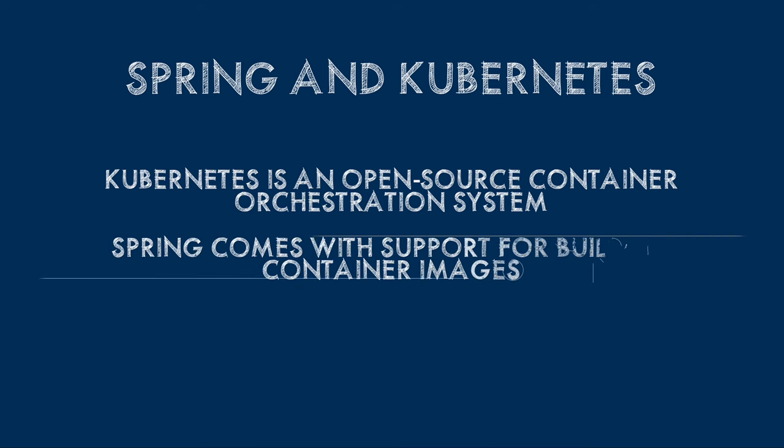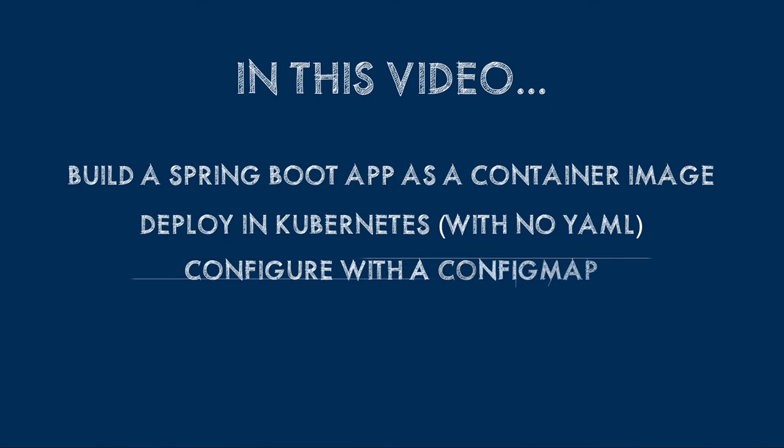Kubernetes is an open source container orchestration system — a platform for deploying and managing the lifecycle of applications packaged in container images. If you're a Spring developer, Spring Boot offers fantastic build-time support for creating container images and runtime support for configuration, liveness, readiness, and graceful shutdown. In this video I'll show you how to build a Spring Boot application into a container image, deploy it in a Kubernetes cluster, and configure it using a ConfigMap — all without writing a single line of YAML.